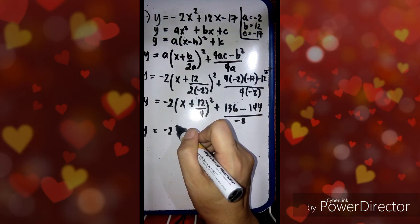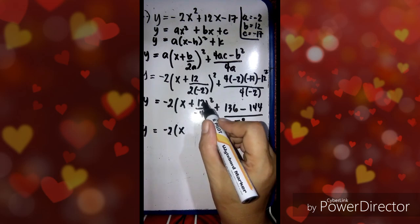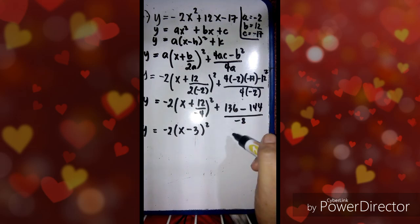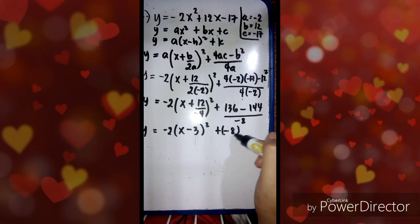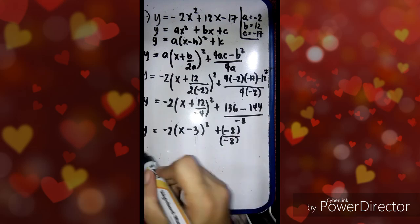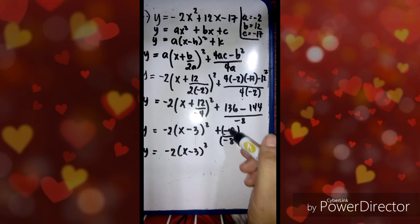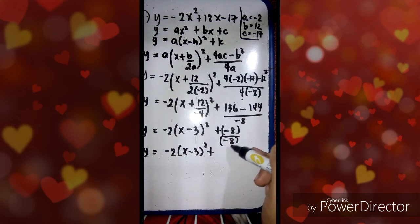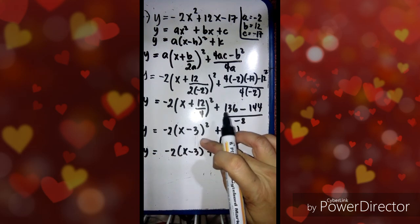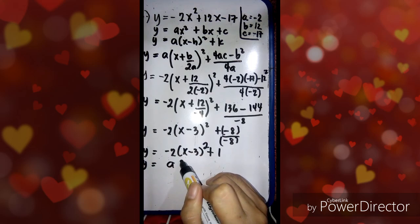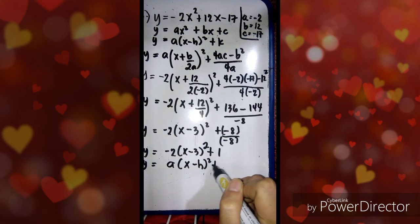Then y equals negative 2 times x — positive 12 divided by negative 4 is negative 3 — squared, plus 136 minus 144 is negative 8, over negative 8. Then y equals negative 2 times x minus 3 squared. Negative divided by negative is positive, and 8 divided by 8 is 1. So now it is in the form of vertex form: y equals a times the quantity of x minus h squared plus k.